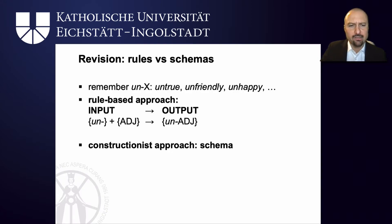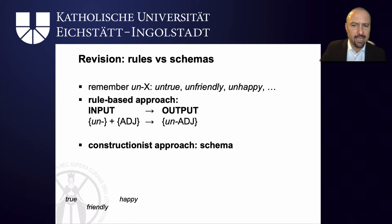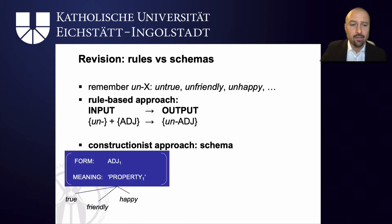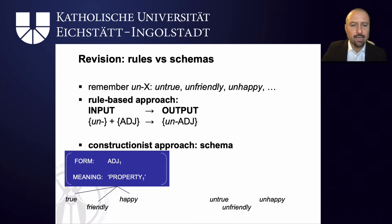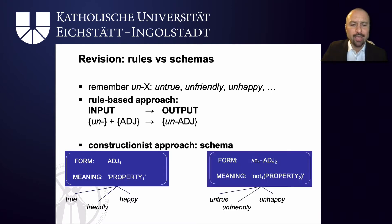Constructionist approaches, in particular usage-based ones, differ from this — they adopt a schema approach. So we are exposed to words like true, friendly, and happy, and because of this we create an abstract schema for adjectives in that they denote properties. Similarly, if you hear untrue, unfriendly, and unhappy, you will be able to generalize to a schema that starts with un- on the formal level, then has a slot for an adjective, and means 'not the property denoted by the adjective.'